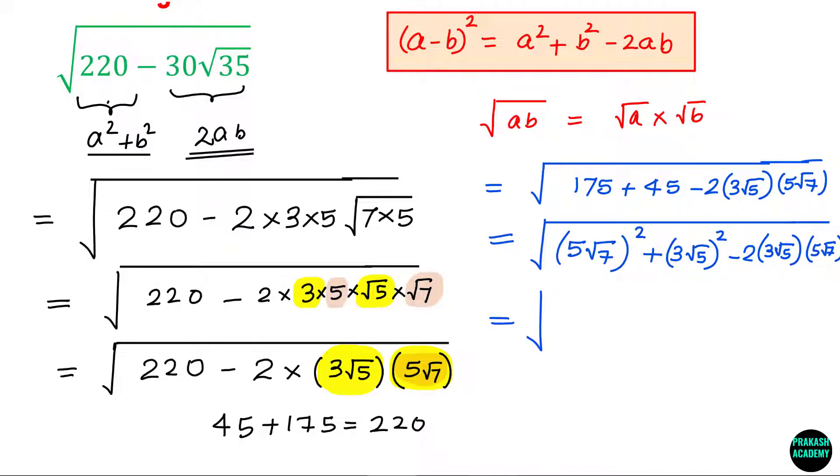So now I can say this can be written as 5 root 7 minus 3 root 5 whole square. So this is the answer for this problem. You can also consider the negative root but generally this is considered as a positive square root. This symbol denotes the positive square root, and that is why I have taken positive number as the answer for this problem.